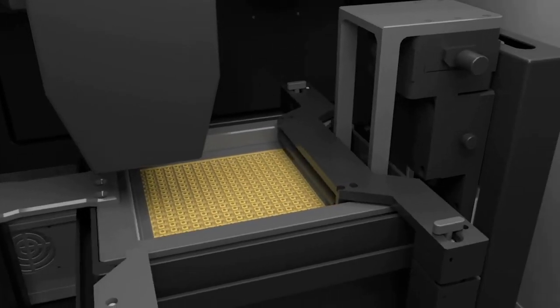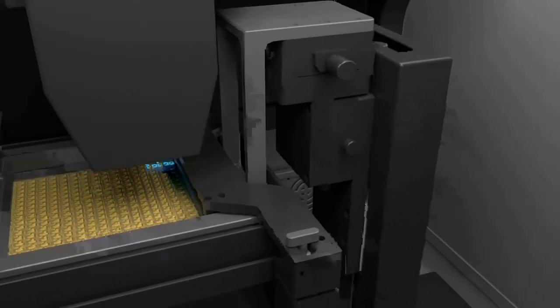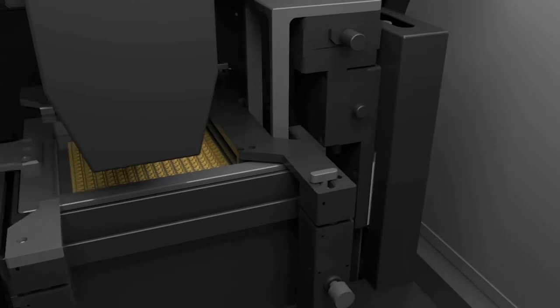As printing starts, cross-sections of the part are imaged from the 3D file onto the build plate through a DLP projector.